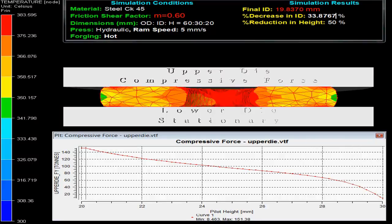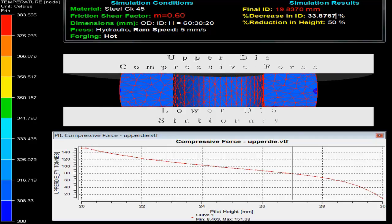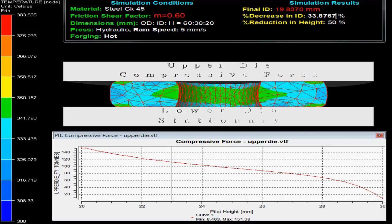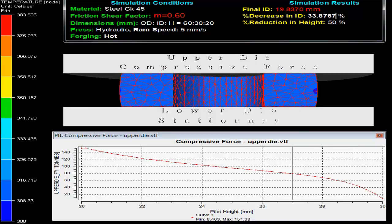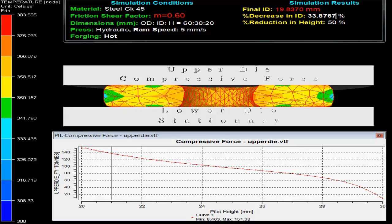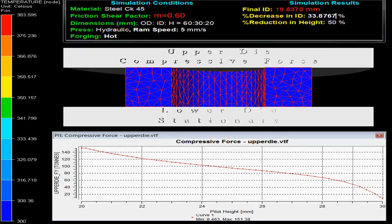On the top left corner in the video one can observe the simulation conditions. The specimen material is steel with friction shear factor M as 0.6 and initial outer diameter to inner diameter to height ratio as 60 to 30 to 20.